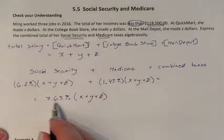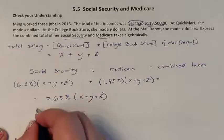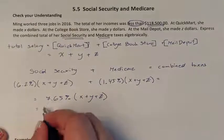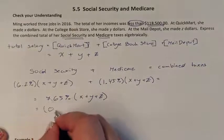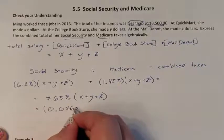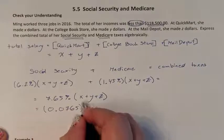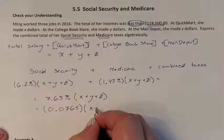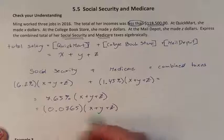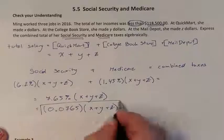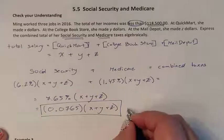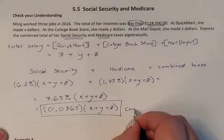To express this algebraically, we convert the percentage to a decimal: 0.0765 multiplied by (X + Y + Z). This is her total combined FICA taxes.